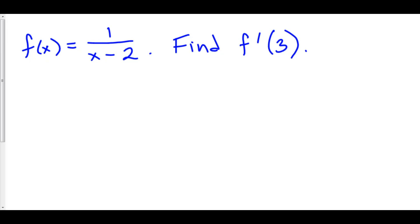Here we have some new notation. What does f prime of 3 mean? Well, it means we want to find the derivative of f. That's what f prime is. f prime is the derivative of f at x equals 3.